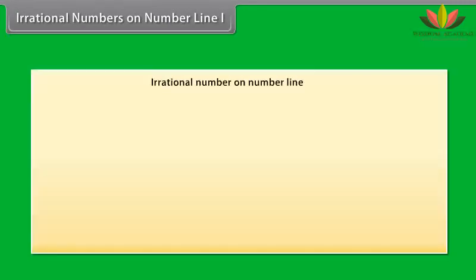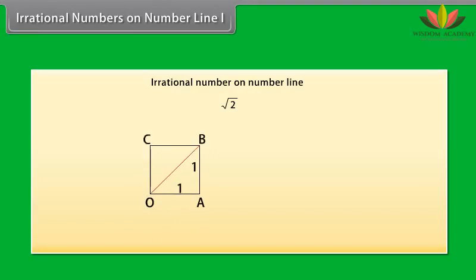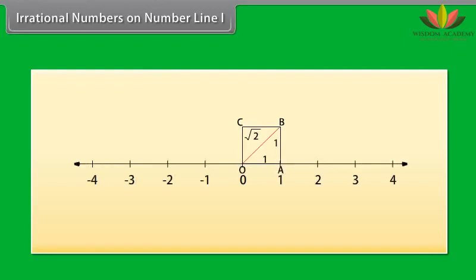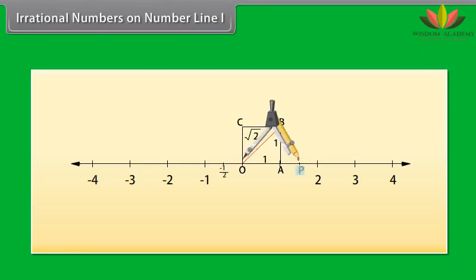Irrational numbers on the number line. Now we will learn to locate irrational numbers on a number line. Let us see where √2 is located. We will consider a unit square OABC with each side 1 unit in length. By using the Pythagorean theorem, OB² = 1² + 1², so OB = √2. To represent √2 on the number line, we transfer the square onto the number line, making sure vertex O coincides with 0. Using a compass with center O and radius OB, we draw an arc intersecting the number line. This point P corresponds to √2 on the number line.